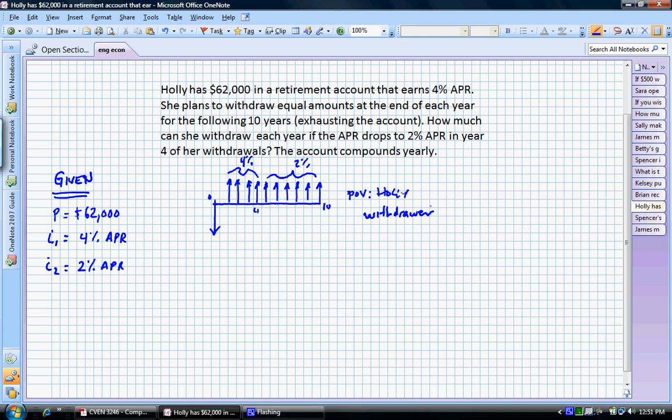So we have that variable interest rate. We have an N1 equal to four years, and an N2 which is equal to six years. Now, what we obviously have to do is break this problem up into two pieces. By breaking this problem up into two pieces, we can solve appropriately.